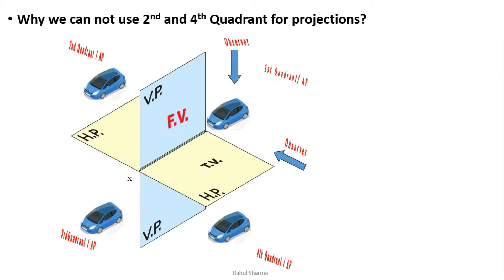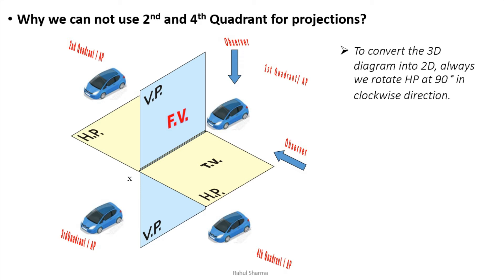An important question: why can't we use the second and fourth quadrant for the projection system? In India we use the first quadrant, in the US they use the third. The reason is that to convert 3D into 2D, we always rotate HP 90 degrees clockwise. Even with front view on VP and top view on HP, the planes are still 3D, so we must rotate to get a flat 2D drawing.